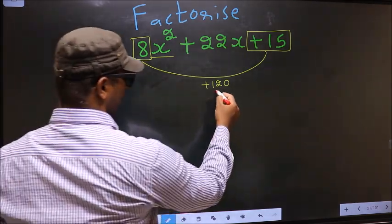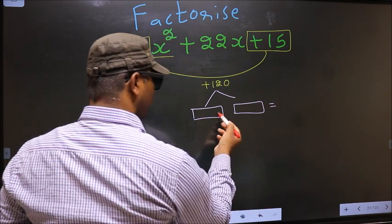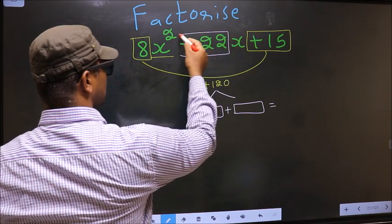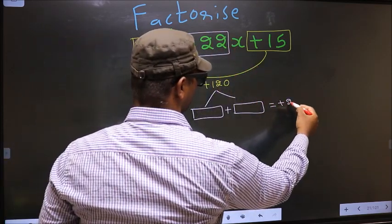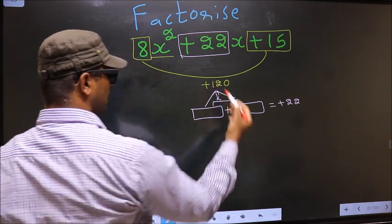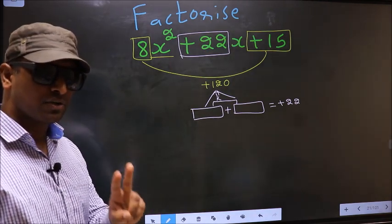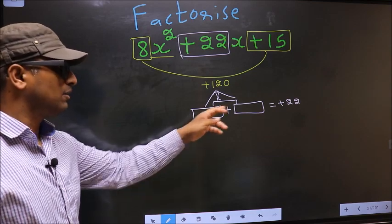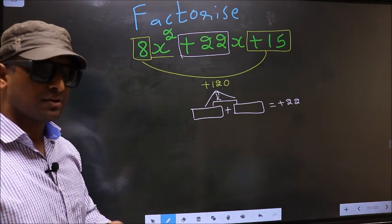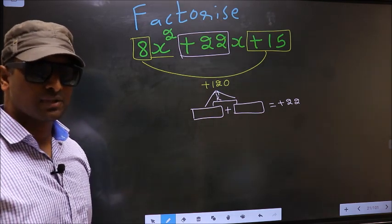Next, you should look out for 2 numbers such that when you add these 2 numbers, you should get the middle coefficient, that is plus 22, and also when you multiply them, you should get plus 120. To get those 2 numbers, we should take LCM of 120.